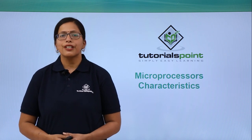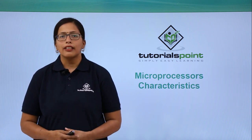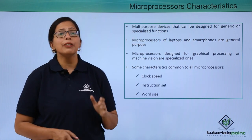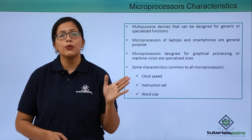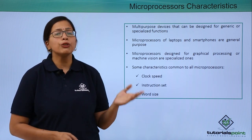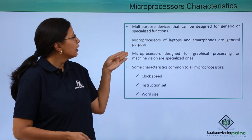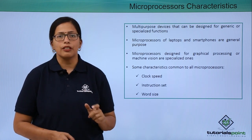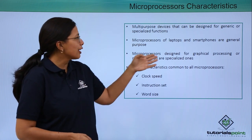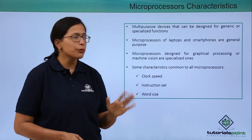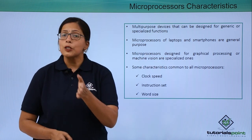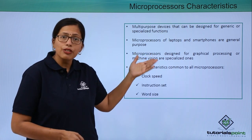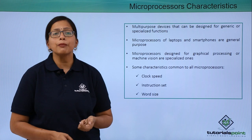In this video, we are going to discuss microprocessor characteristics. Microprocessors are multi-purpose devices that can be designed for generic as well as specific use. If you take your mobile phone or laptop, that microprocessor is a general purpose microprocessor. However, microprocessors can also be designed for graphical processing or machine vision — those are the specialized ones.